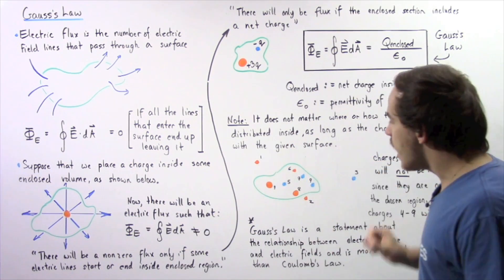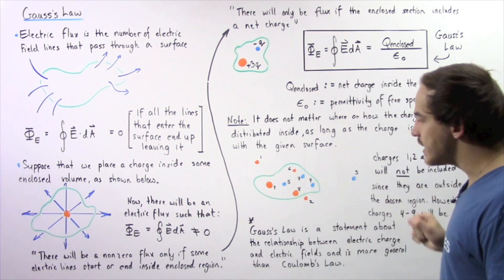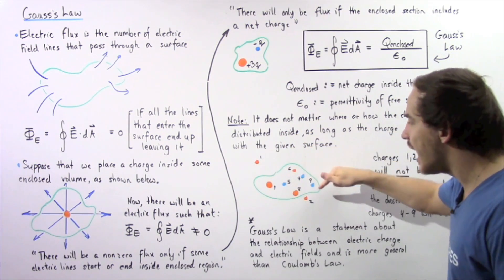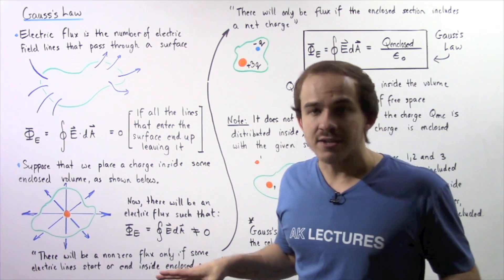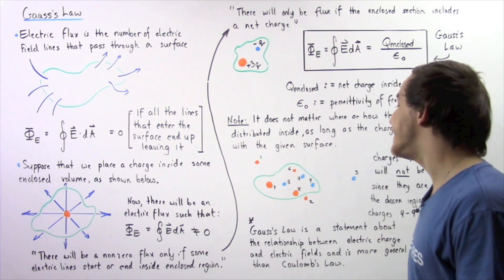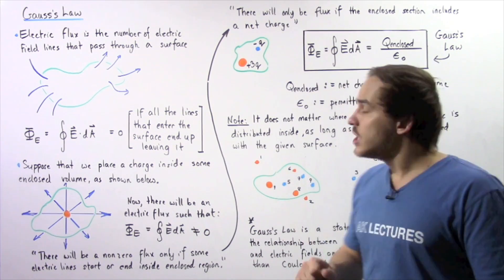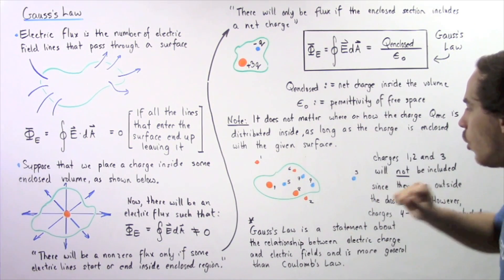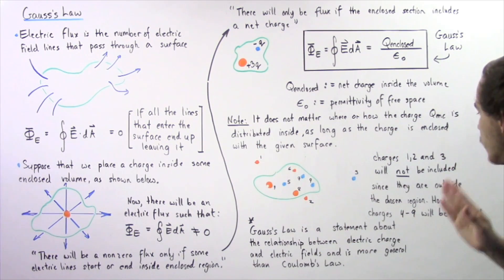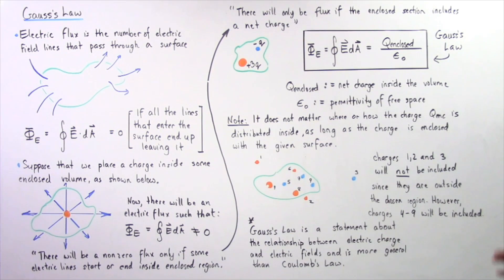For example, if we are looking at a particular region of space, we should only consider charges 4 through 9 and not charges 1, 2, and 3, because charges 1, 2, and 3 are not found inside our enclosed region. When calculating Q enclosed we only include charges 4 through 9. However, we can redefine our chosen region to also include charges 1, 2, and 3 if desired.